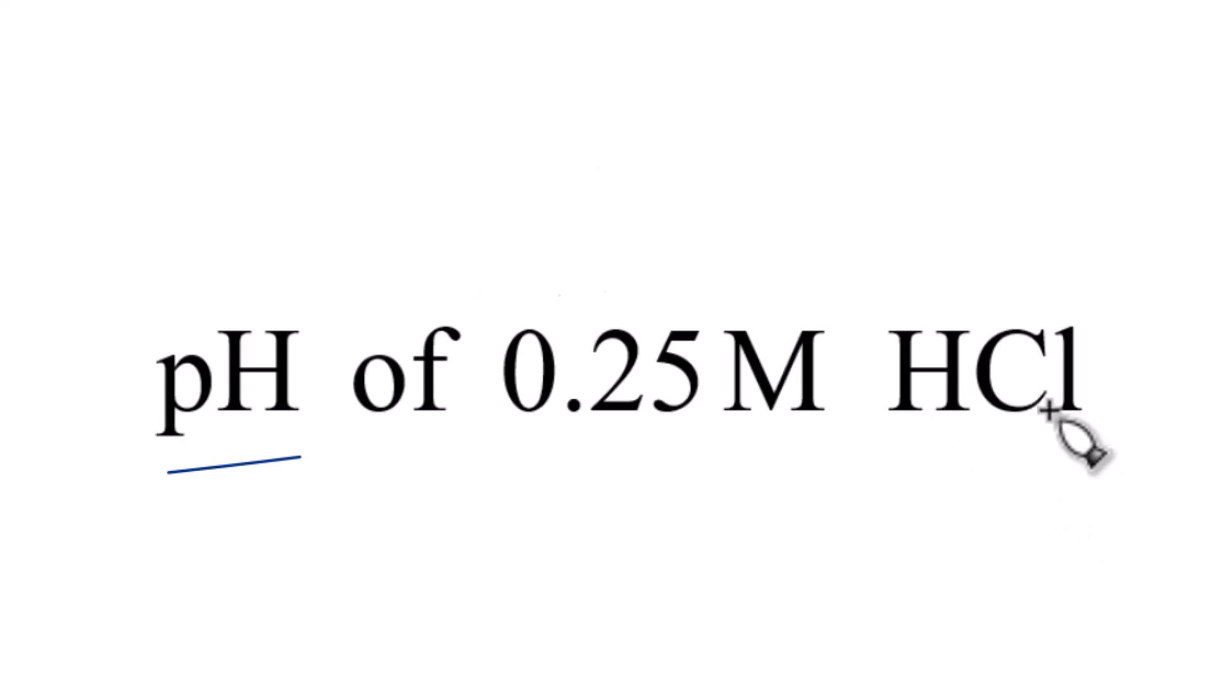First off, HCl, that's a strong acid, so you just need to memorize that. Because it's a strong acid, it'll split apart into its ions. It'll be dissociated completely, so we'll have H+ ions and Cl- ions.